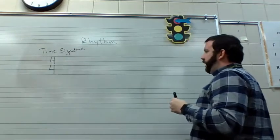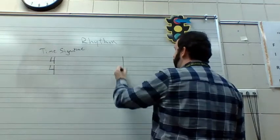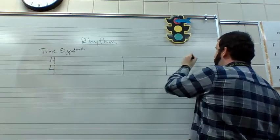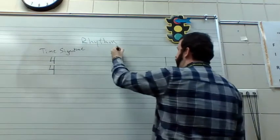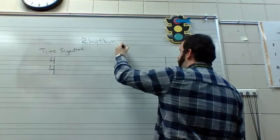So what is a measure? Throughout the music, you will see vertical bars that go like this, and we call these bar lines. This is called a bar line.